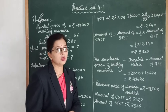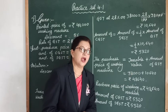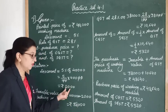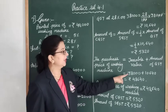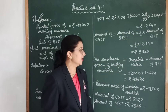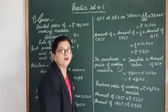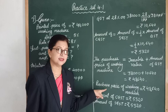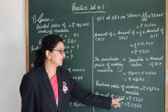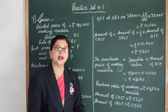The purchase price of the washing machine equals taxable value plus GST: 38,000 plus 10,640 gives 48,640 rupees. To summarize: purchase price of washing machine is 48,640 rupees, amount of CGST is 5,320 rupees, and amount of SGST is 5,320 rupees.